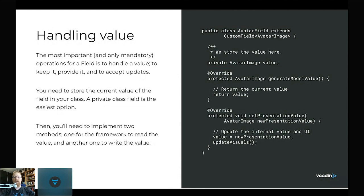The one and only reason for a custom field to exist is to handle a custom value. We store the value as a class field — a private avatar image value in our avatar field class that extends CustomField with the type AvatarImage. Then we have two methods: generate model value and set presentation value. Generate model value is called by the framework whenever it needs the current value, typically when storing the bean.